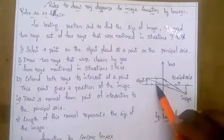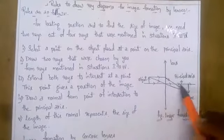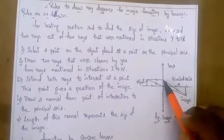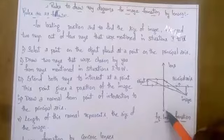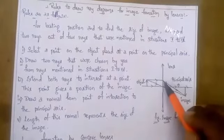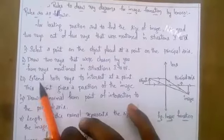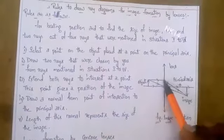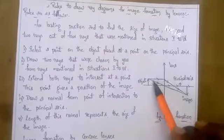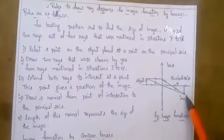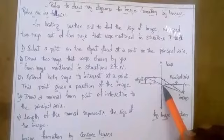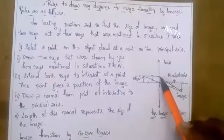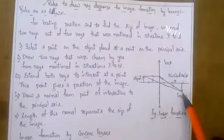The ray passing through the optic center does not deviate — it goes straight. The ray which is parallel to the principal axis, after refraction through the convex lens, will get deviated. As it is a convex lens, the property is that after refraction the light ray will converge. We have to extend both rays after passing through the convex lens — the optic center ray goes straight, and the parallel ray after refraction converges toward the optic center ray. Both rays will meet at one point.